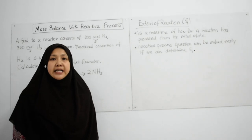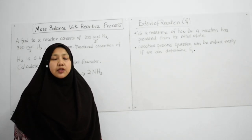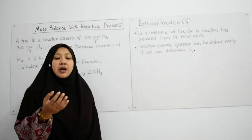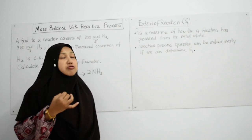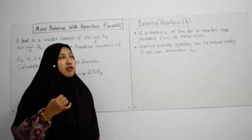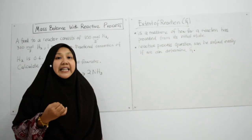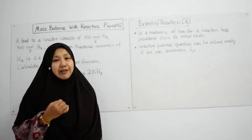Extent of reaction is a method that we use to solve mass balance with reactive process. We actually have 3 methods: molecular methods, atomic methods, and also extent of reaction. Normally extent of reaction, if you have complete information, will be the easiest way to be used to solve your question during example test.